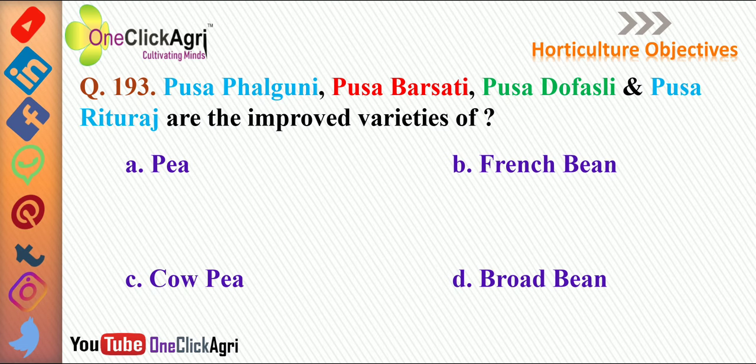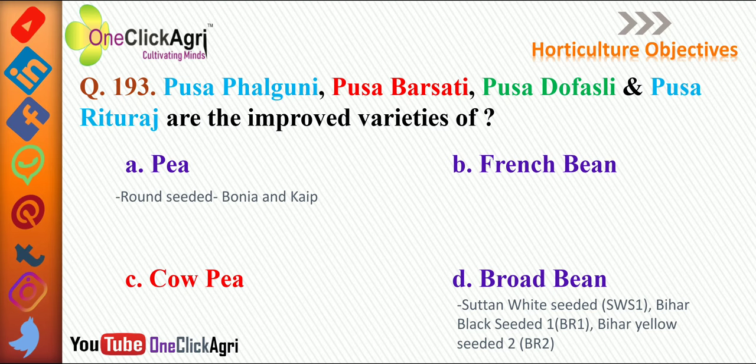Next question: Pusa Falguni, Pusa Barsati, Pusa Dopasli and Pusa Rituraj are the improved varieties of Cowpea. And the round-seeded varieties of Pea are Bonia and Kaip.